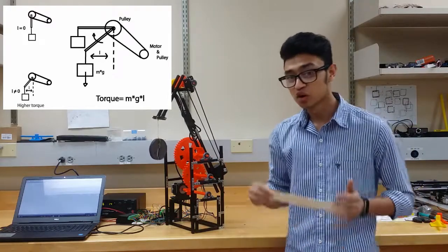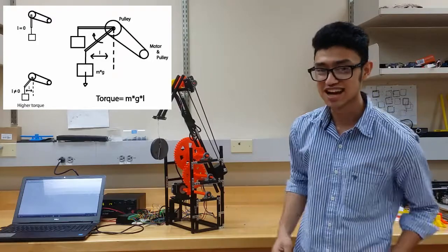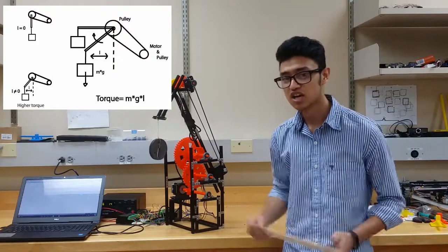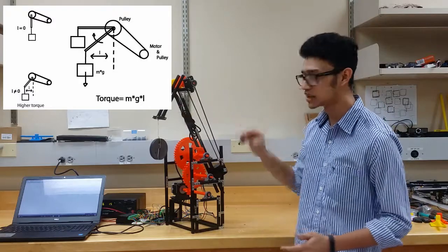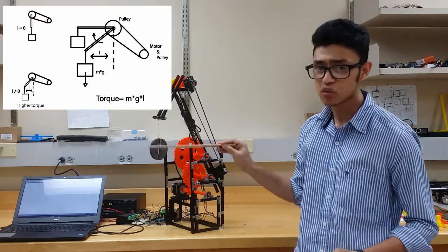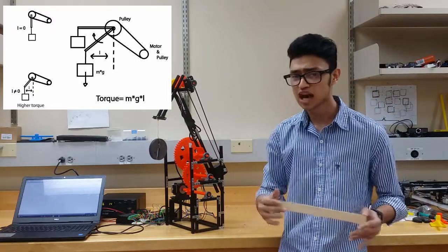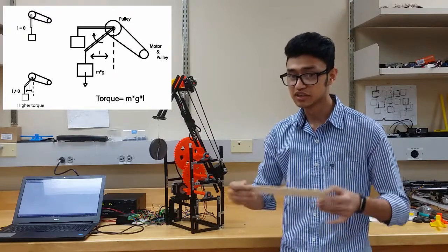Let's move back to the theory. Torque equals mg times distance. A larger distance means a greater torque. When the arm is perpendicular to the ground, the distance between the pulley and the weight is 0. But as the arm begins to lift, the distance increases.